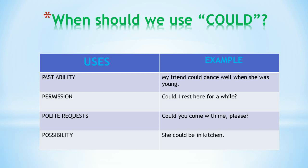The next modal is 'could.' Its uses are: past ability, permission, polite request, and possibility. 'Could' is used to say something was possible or someone had ability in the past, not in the present. For example — past ability: 'My friend could dance well when she was young.'